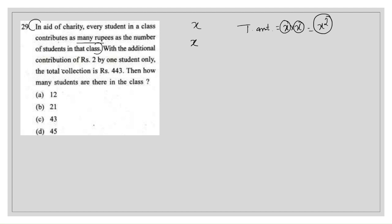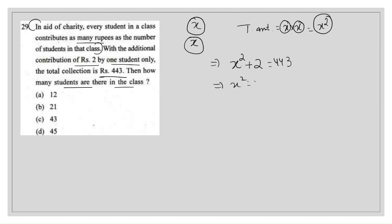With the additional contribution of rupees 2 by one student, the total collection is equal to 443. So x squared plus 2 equals 443, which gives x squared equals 441 after subtracting 2. Therefore x equals the square root of 441, which is 21. The answer is 21 — meaning there are 21 students in the class, and each student's contribution is also 21 rupees.